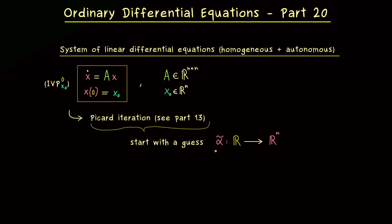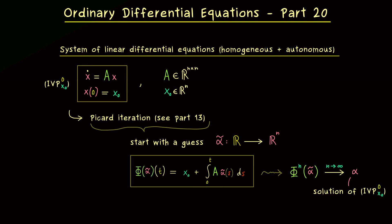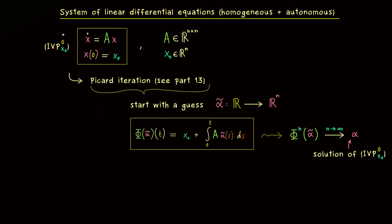Let's say our first guess is called α̃, a map from R into Rⁿ, and then we apply our map φ. Recall the definition of φ: it's x₀ plus the integral from 0 to t of the vector field on the right-hand side, but with α̃(s) in place of x. For our linear homogeneous case this is simply a matrix-vector multiplication inside the integral. We apply φ iteratively, and in the limit we get the actual solution of the initial value problem — a fact that comes from the Banach fixed point theorem.